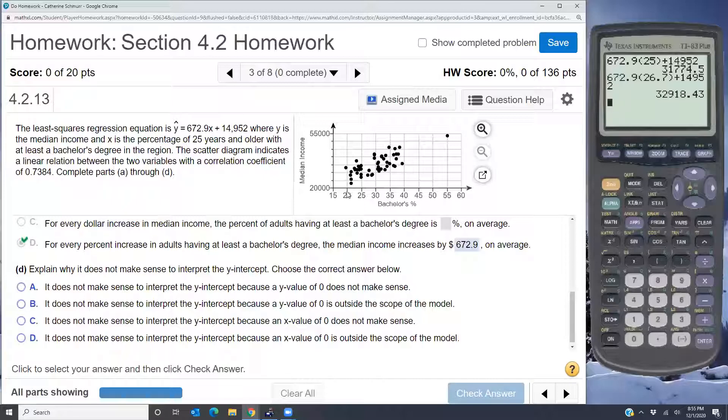Because if you look at the data here, you have your x. The lowest x value looks like it's about 18 or 19. So the lowest x is way above zero. And so we would say that x equals zero is outside the scope of the model in this case.